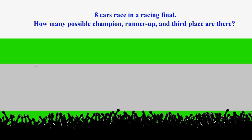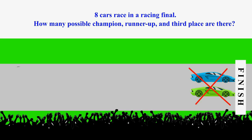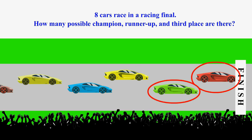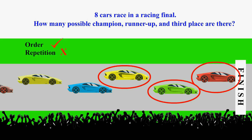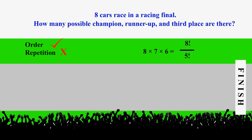Example two: Suppose that there are eight cars racing in a final. How many possible champion, runner-up, and third place results can there be? We assume no two cars finish at the same time. We're interested in the cars that end up in the first, second, and third positions. These three positions are not interchangeable, so order is important. Also, it is impossible for a car to end up in two different positions, so repetition is not allowed. Therefore, this is a permutation case. There are eight times seven times six possibilities, which equals eight factorial over five factorial — that is P(8, 3).